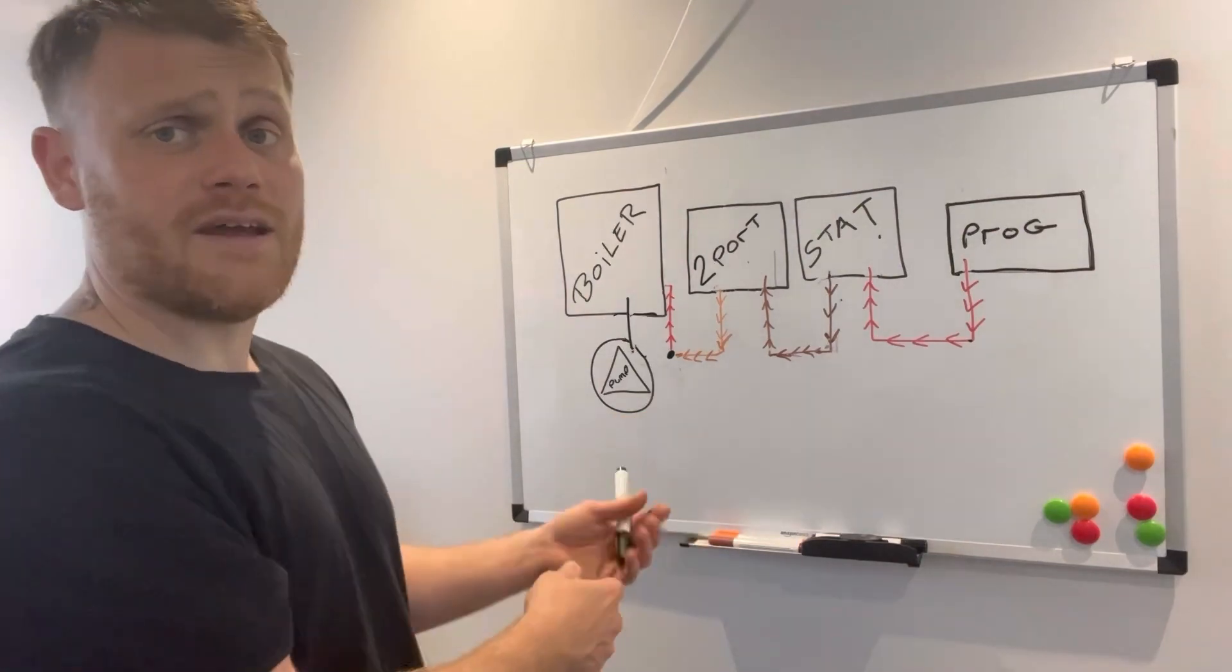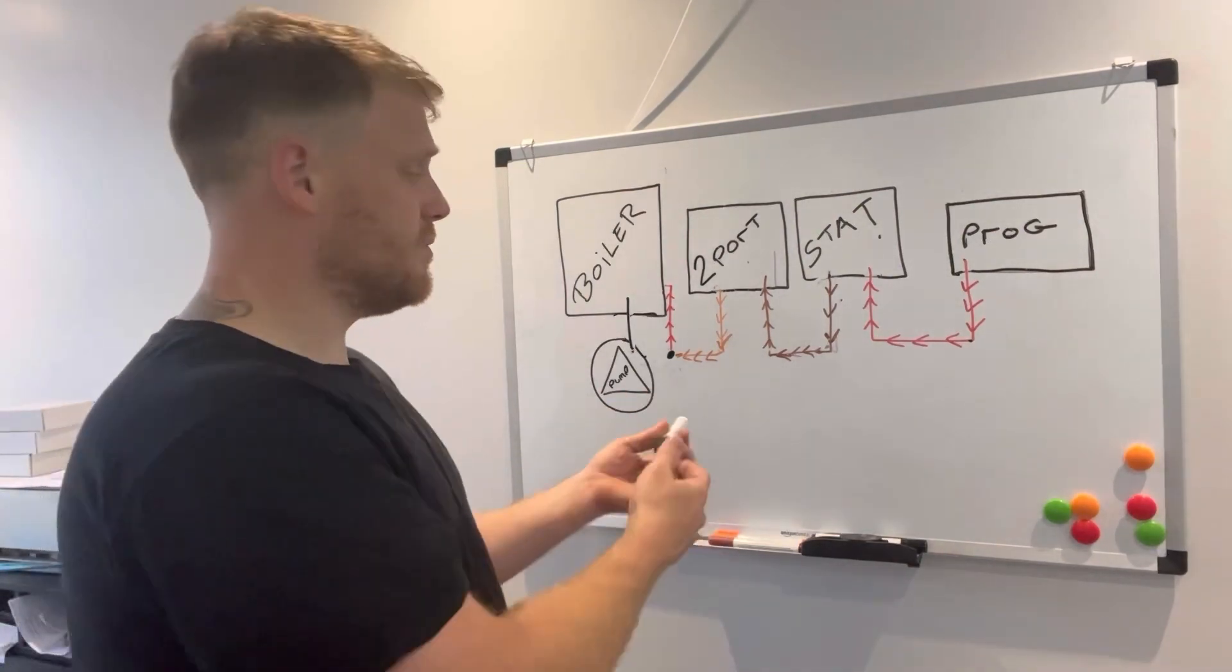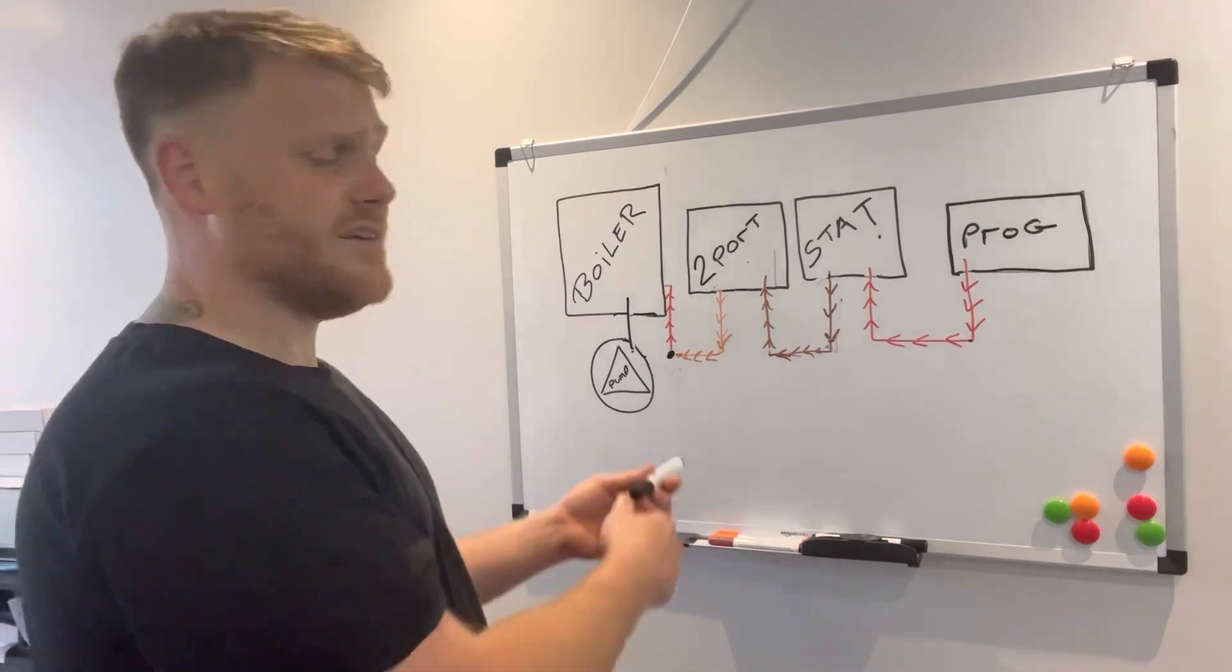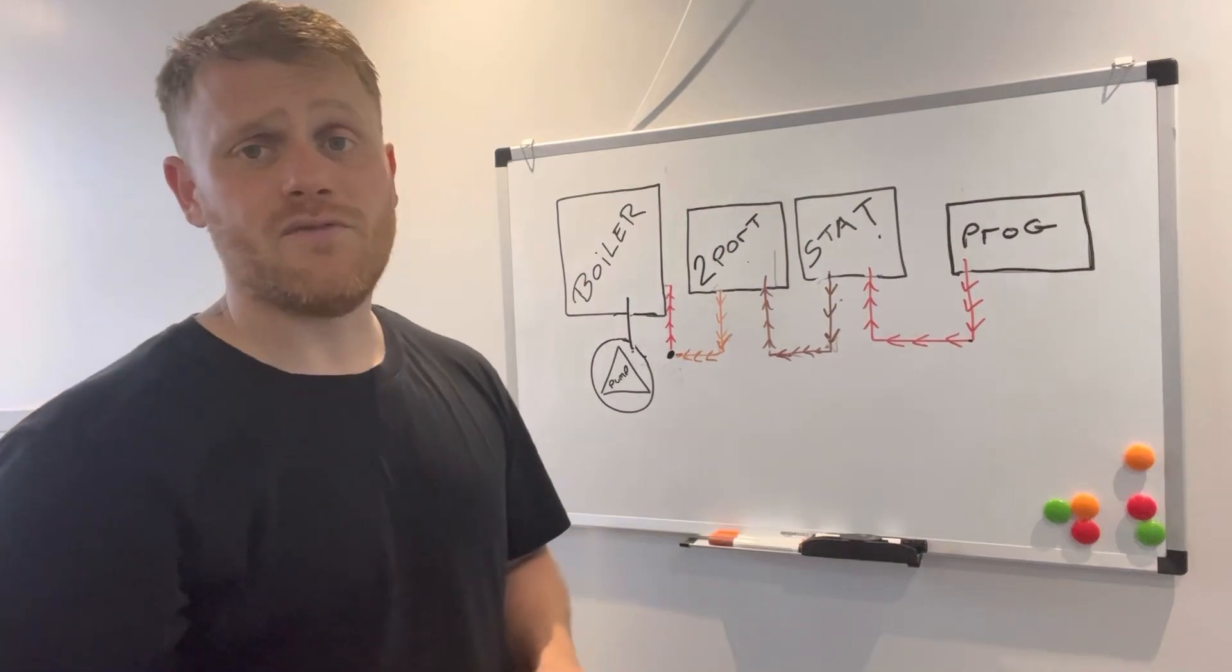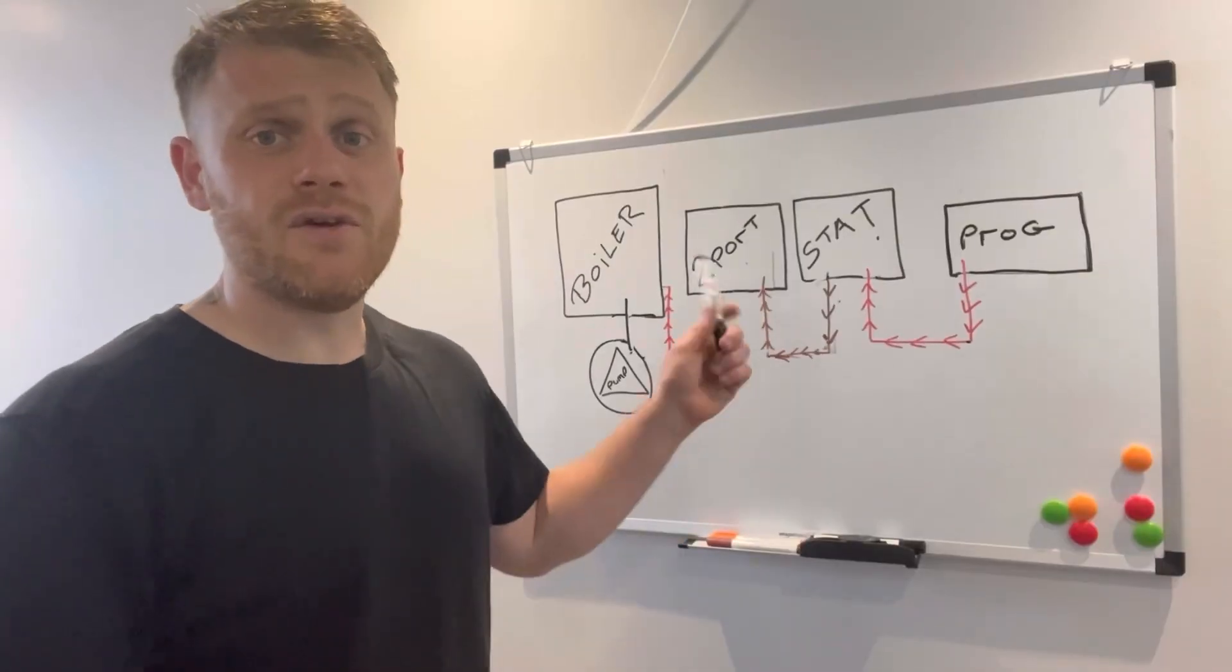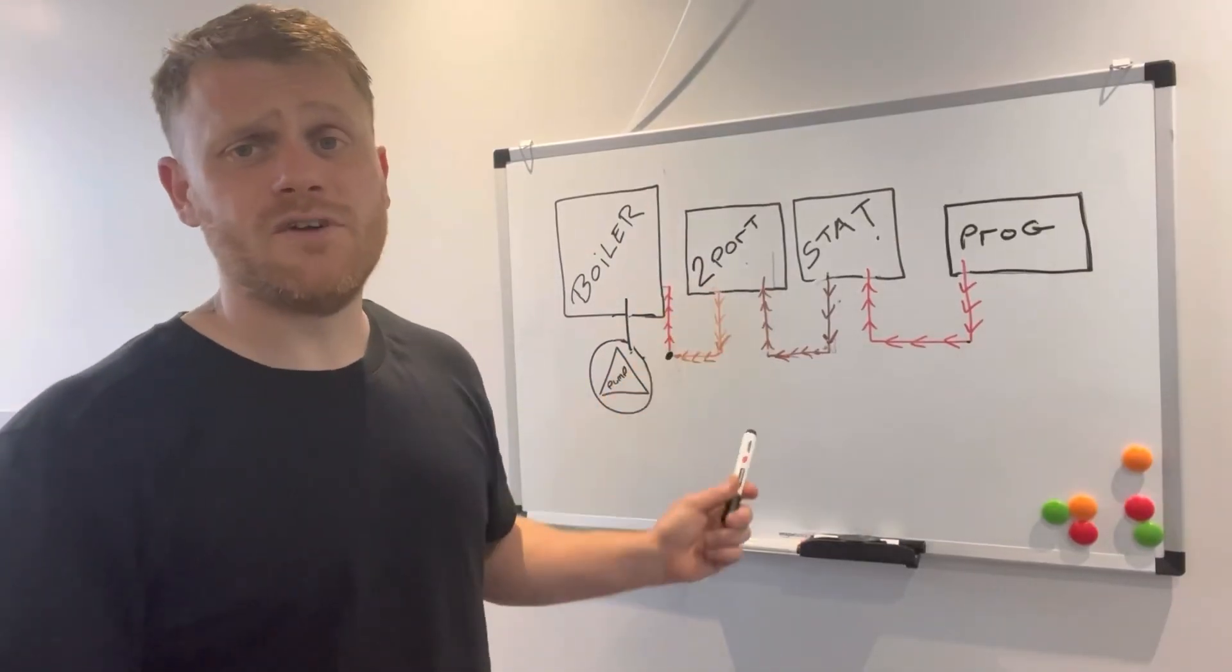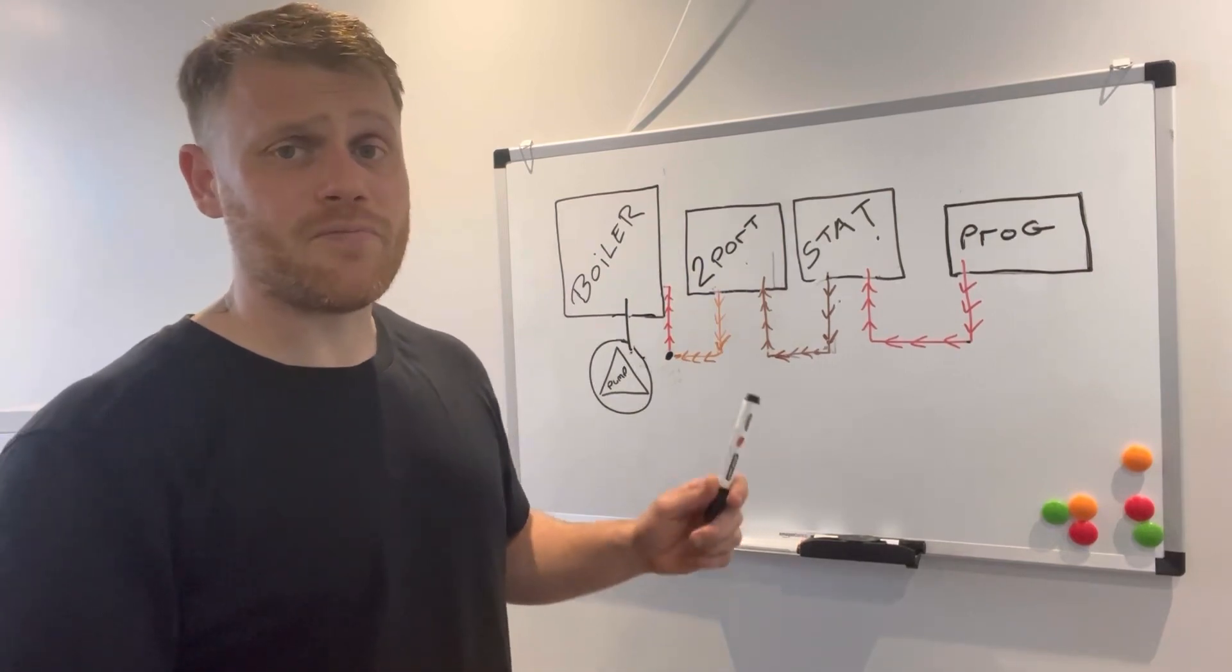Obviously if it's 240 here, the boiler should be coming on. Fault finding becomes a lot easier once you understand electrics. When you turn up to a fault on these and say the hot water's working but the heating isn't, you can just get your probes out, start testing, and you can find where the fault is really easy.